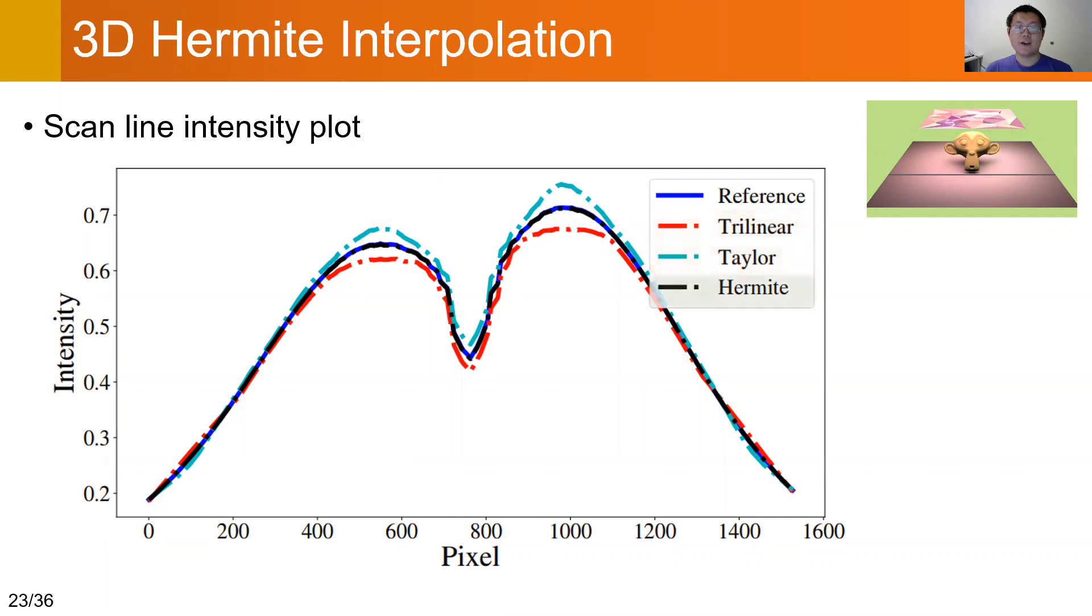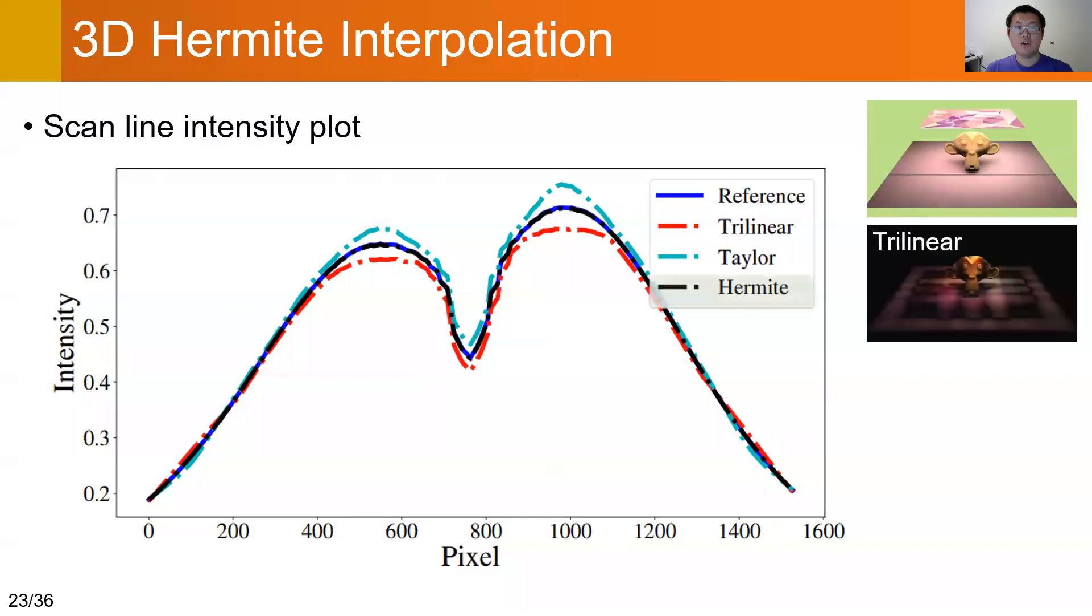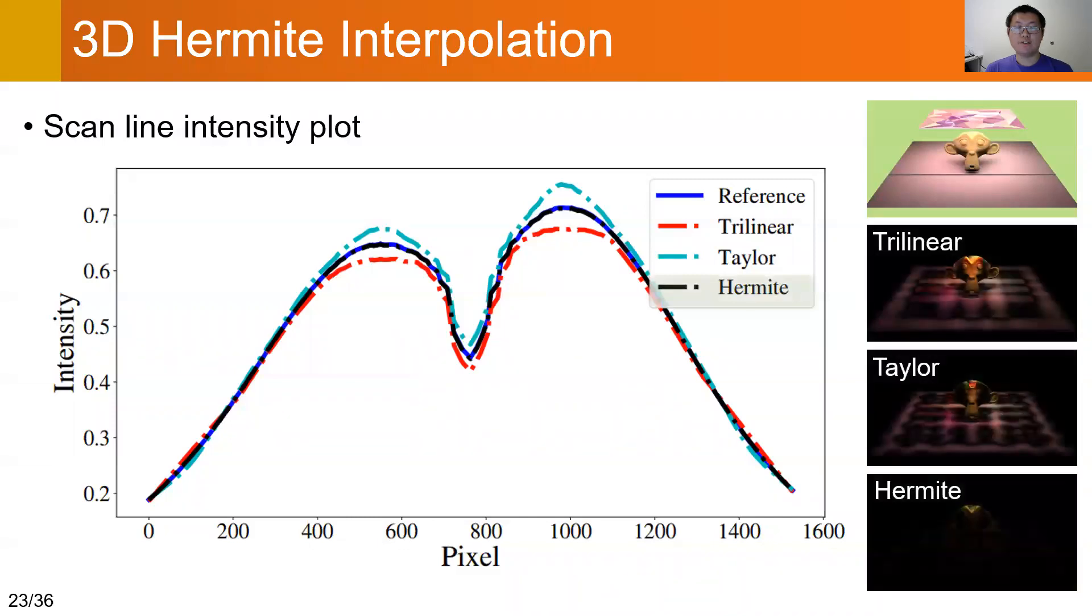Only the Hermite curve perfectly matches the reference. On the right, we provide error maps of the full image. The one using the Hermite interpolation has the lowest error.